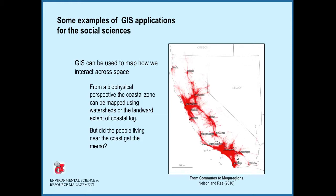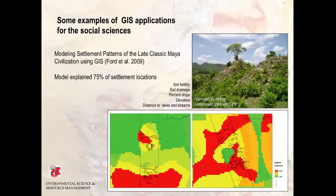The implication is that the economic influence of port cities such as Port Hueneme, Los Angeles, Long Beach, and San Diego may expand what we would otherwise think of as the southern California coastal zone.